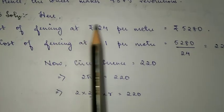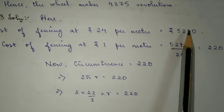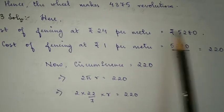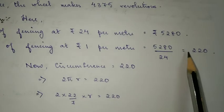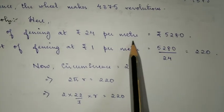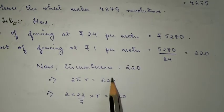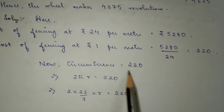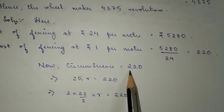Let's write down what's given. Cost of fencing at rupees 24 per meter is 5280. We're going to find out the meter, so we can find the circumference which is 220.